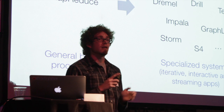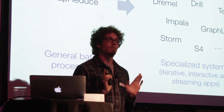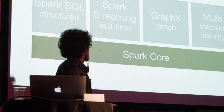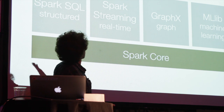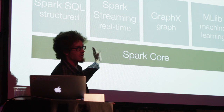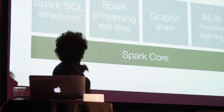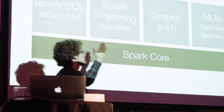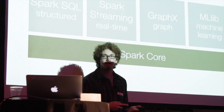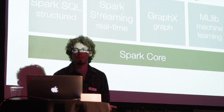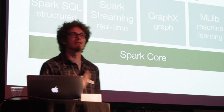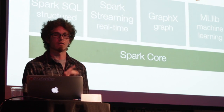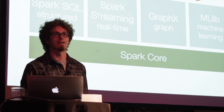One of the nice selling points of Spark is that in addition to Spark core, we ship a set of standard libraries on top for doing all of these tasks — for structured data processing, streaming, graph processing, and machine learning. This means you can do a lot of stuff out of the box in Spark in one unified system.